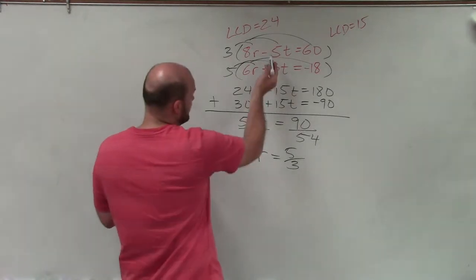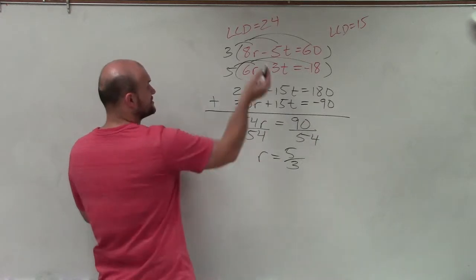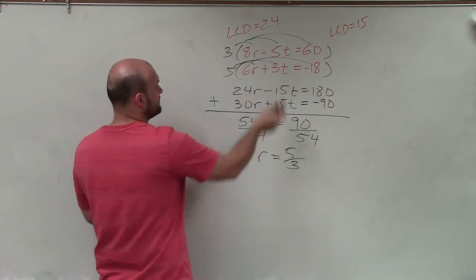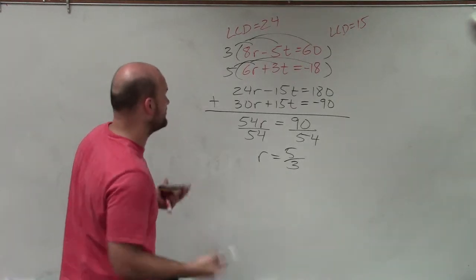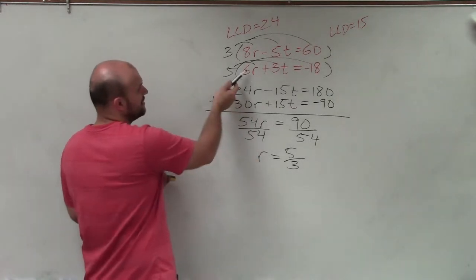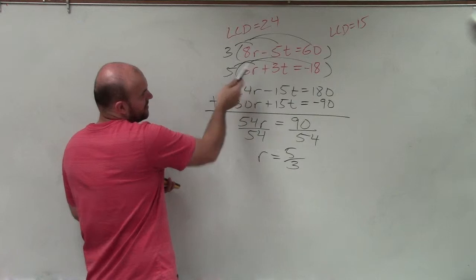Now, to solve for, that is what r equals. Now to solve for t, I need to plug 5 thirds into one of these equations. And preferably, I'm going to want to plug this into a variable where it simplifies. So I'll plug it into the second one.